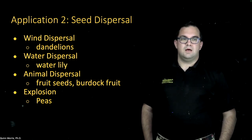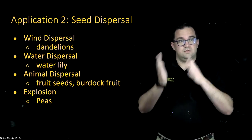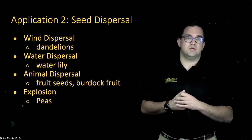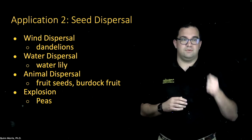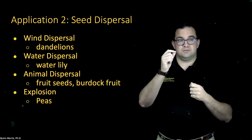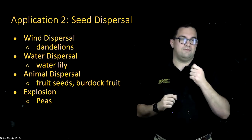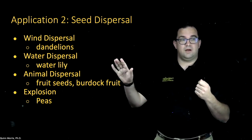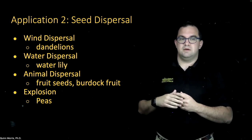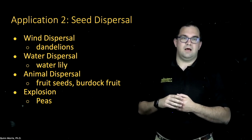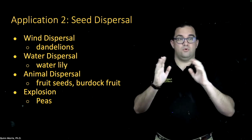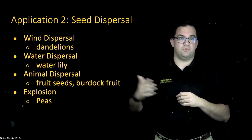Moving on to another application, I want to talk about seed dispersal, moving over to the biological sciences and thinking about the different ways that plants may spread their seeds. There are a lot of different ways: wind dispersal — if you think about dandelions, you might have picked them as a kid and blown the petals off, but each white puff is connected to a seed at the bottom, really meant for the wind to carry the seeds away so that dandelions spread. Other plants use water dispersal, such as water lilies, or there are plants whose seed pods pop open and explode to shoot seeds out.